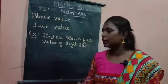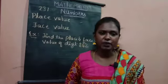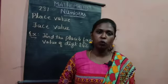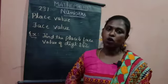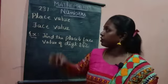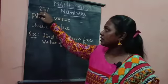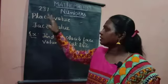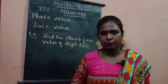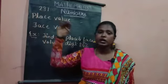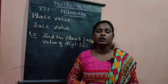Now let us see what is face value. In face value, the value of a digit does not change — it is constant in all situations. For example, in 231, the face value of one is one, the face value of three is three, and the face value of two is two itself.